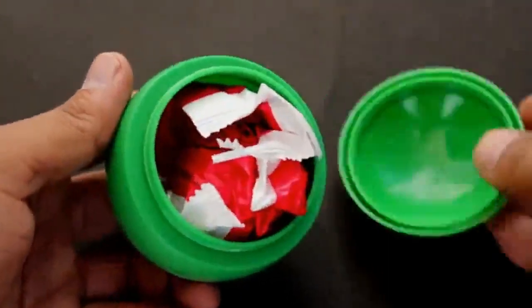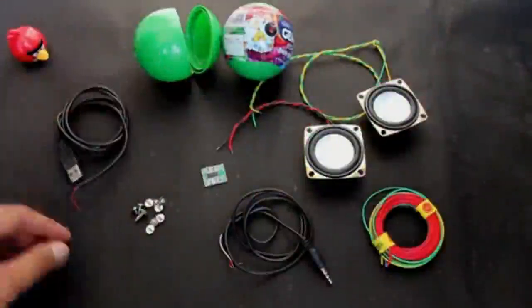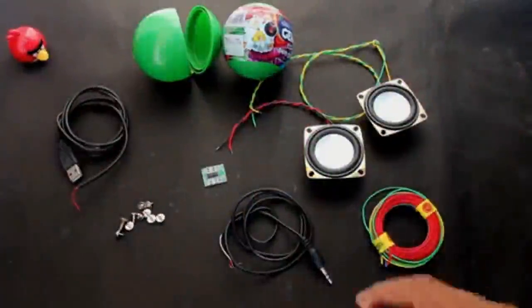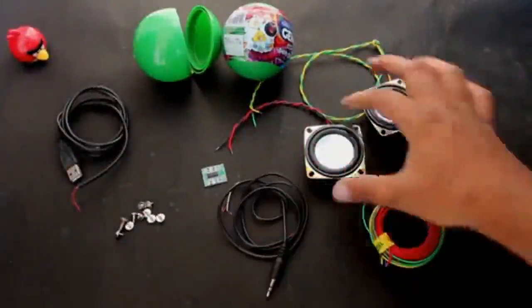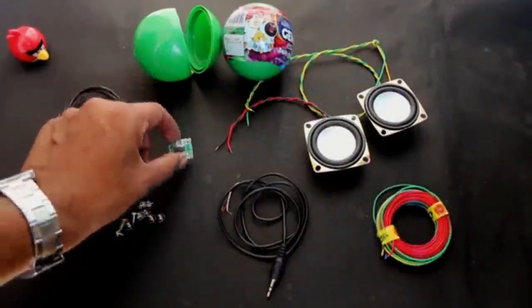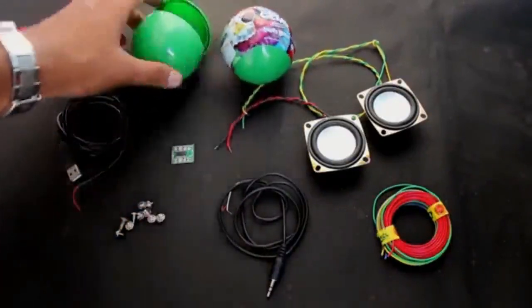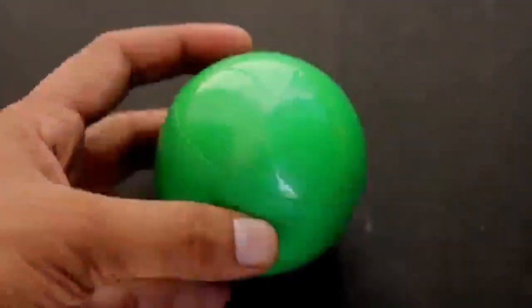What's up crazy buddies, today I am going to show you how to make USB speakers using Cadbury GEMS balls. For this project we require a 5-volt USB cable, some bolts, 3.5mm headphone wire, two 3-watt speakers, wires to connect them, a simple digital amplifier board, and Cadbury GEMS surprise balls. So let's get started.